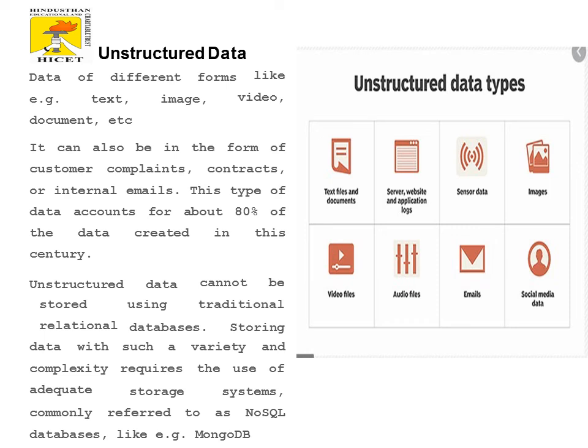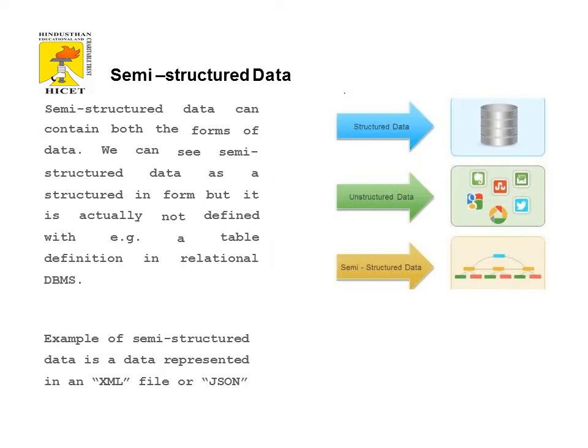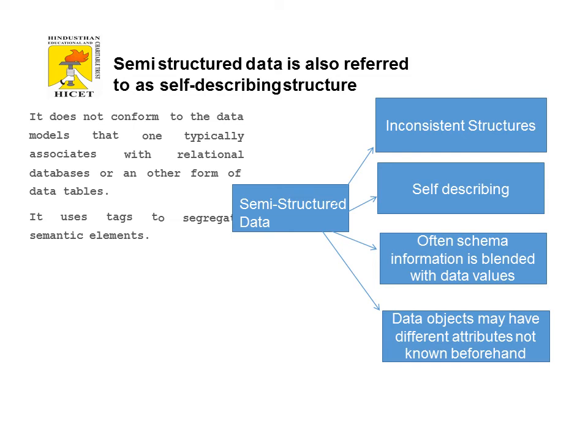We need special databases such as a NoSQL model like MongoDB to store and process unstructured data. The third type is semi-structured data, which contains both forms of data. We can see semi-structured data as structured in form, but it is not formally defined. We need a separate tag to define the objects it contains.